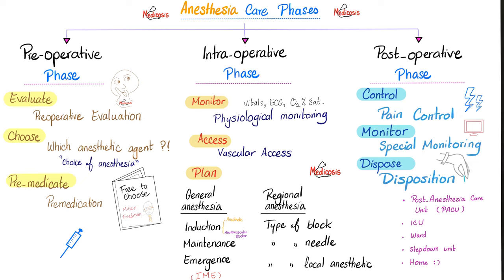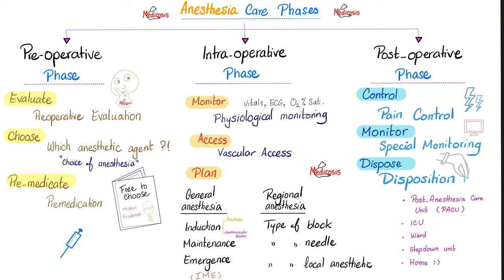Anesthesia care phases: pre-operative, intra-operative, and post-operative. Anesthesia is general, regional, or local. Regional — which is today's topic — is neuraxial, limb, or others.